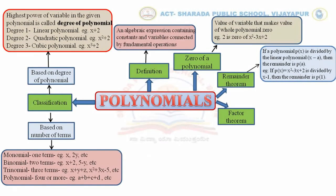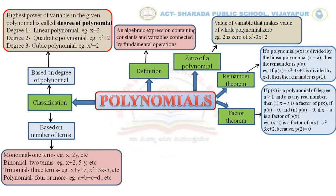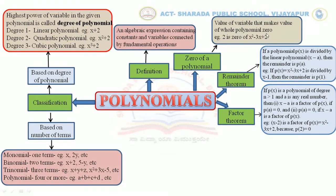Next, the Factor Theorem. If p(x) is a polynomial of degree n greater than 1 and a is any real number, then x minus a is a factor of p(x) if p(a) equals 0, and p(a) equals 0 if x minus a is a factor of p(x). For example, x minus 2 is a factor of p(x) equals x squared minus 3x plus 2 because p(2) equals 0. We also consider the factor and zero of a polynomial as equivalent.